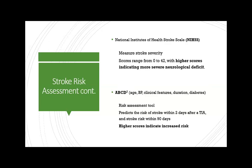The NIHSS — National Institute of Health Stroke Scale — is used commonly when stroke patients arrive and measures neurological deficit severity, ranging from 0 to 42; the higher the score, the more severe the deficit. The ABCD² score takes into account Age, Blood pressure, Clinical features, Duration, and Diabetes. Age threshold is 60 and below; duration is classified from 10 minutes up to one hour. This tool determines the patient's risk for full stroke after TIA within two days, or risk of stroke after 90 days — the higher the score, the higher the risk.